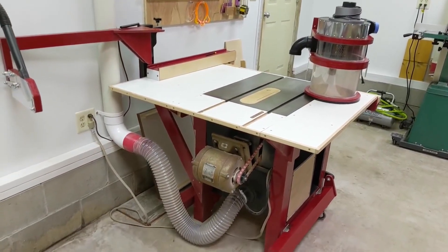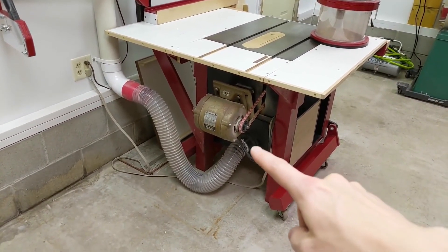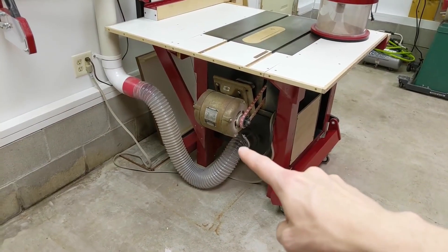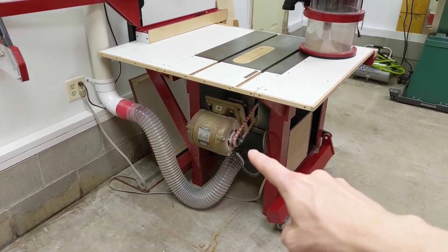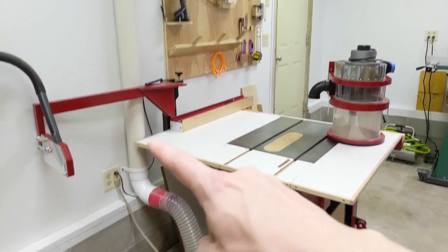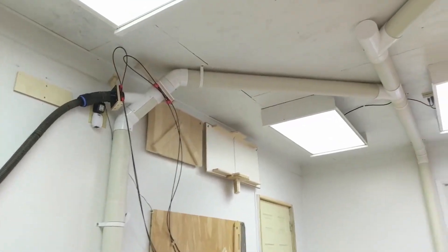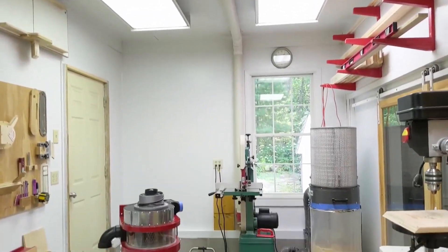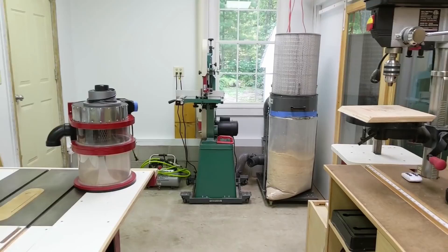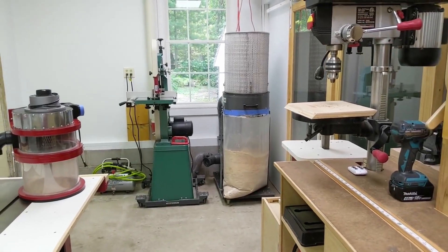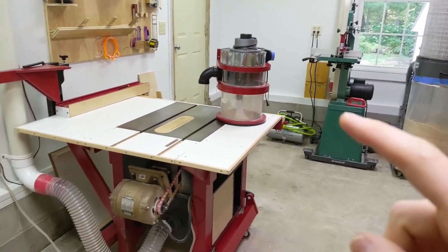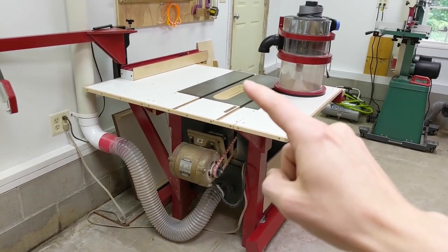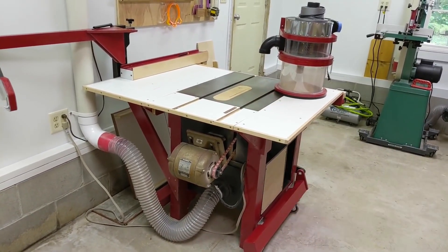On my table saw I've got it hooked up to my main dust collector through a four inch line which hooks to the bottom of the cabinet and that goes up the wall and across the ceiling and then back down the wall behind the bandsaw and then it hooks up to the main dust collector. That does a pretty good job at collecting the dust that goes from the blade into the cabinet.